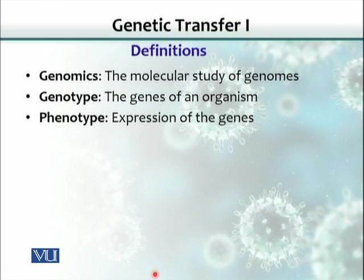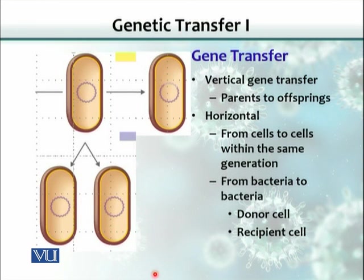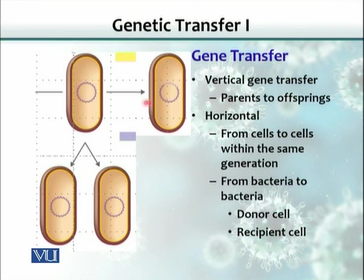There is a genetic character or gene responsible for each phenotype. Genetic transfer in microbes is of two types. A parent organism replicates, duplicates its DNA, and with binary fission divides into two. The daughter cell receives the same set of genes that the parent has. This transfer of DNA from parents to offspring is called vertical gene transfer.